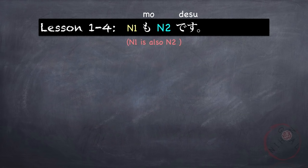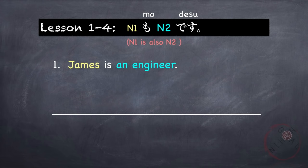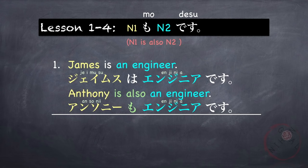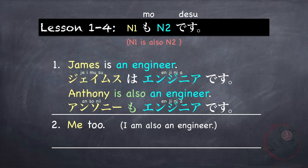Our next grammar is N1 mo N2 desu, meaning 'N1 is also N2.' Mo means 'also.' For example, if our sentence is 'James is an engineer' — James wa enjinia desu — and we want to say Anthony is also an engineer, we say: Anthony mo enjinia desu. We replace wa with mo. If you want to say 'I am also an engineer,' you say: Watashi mo — meaning 'me too' — and you don't need to repeat enjinia desu because it is already implied.